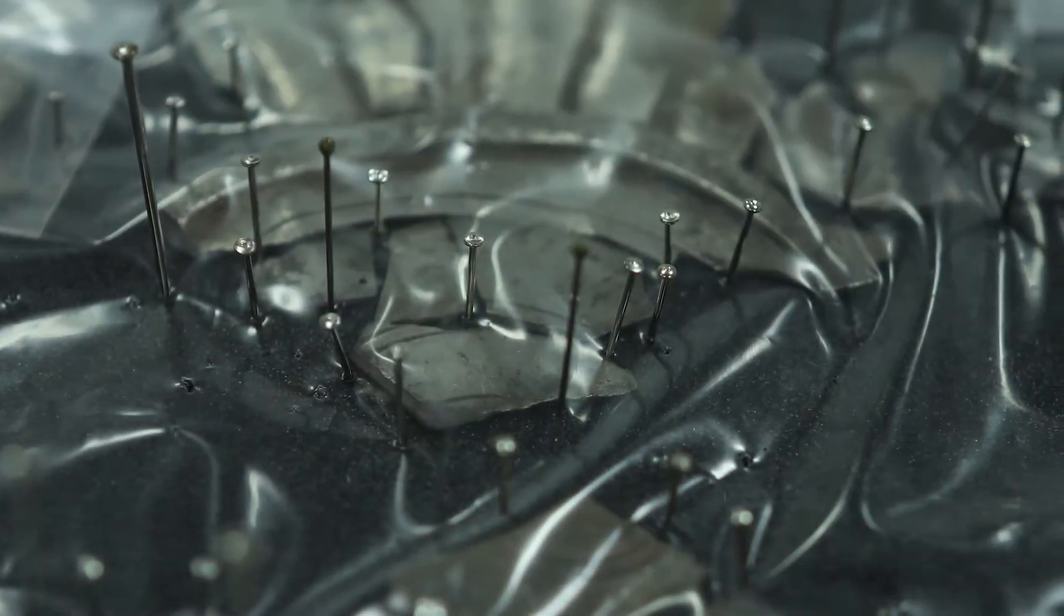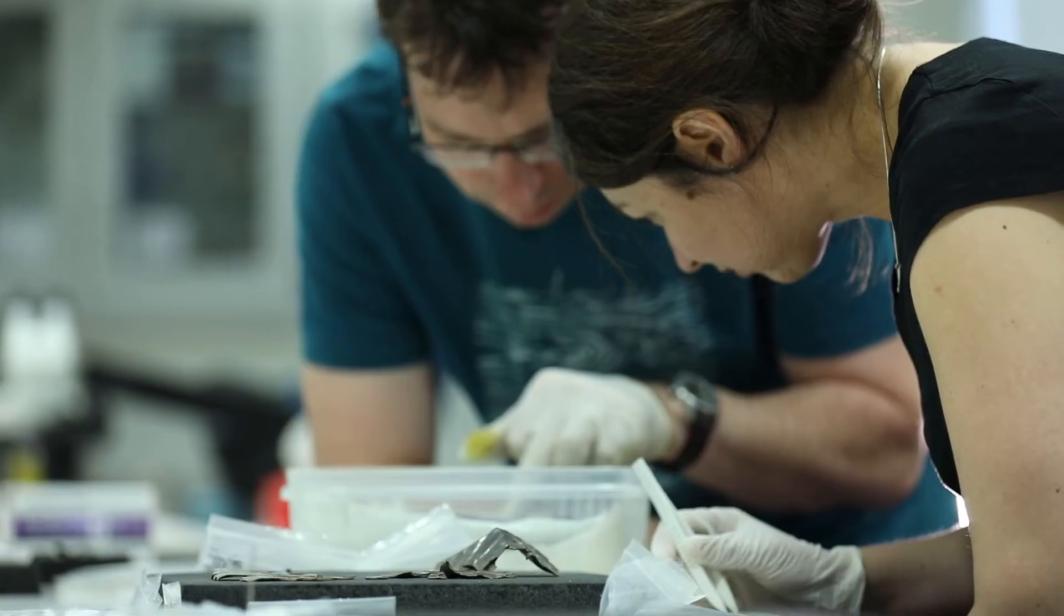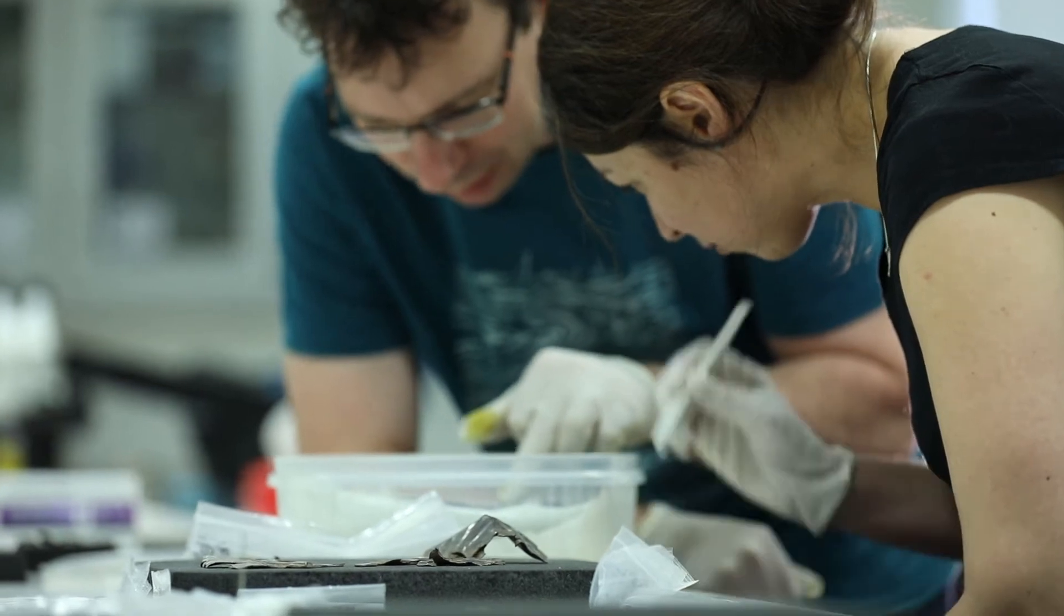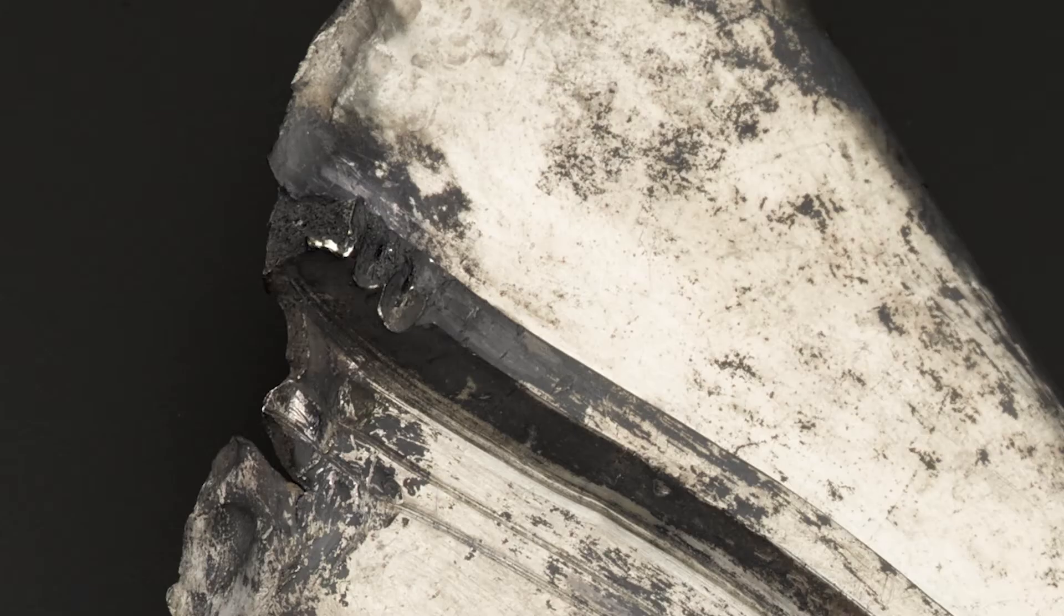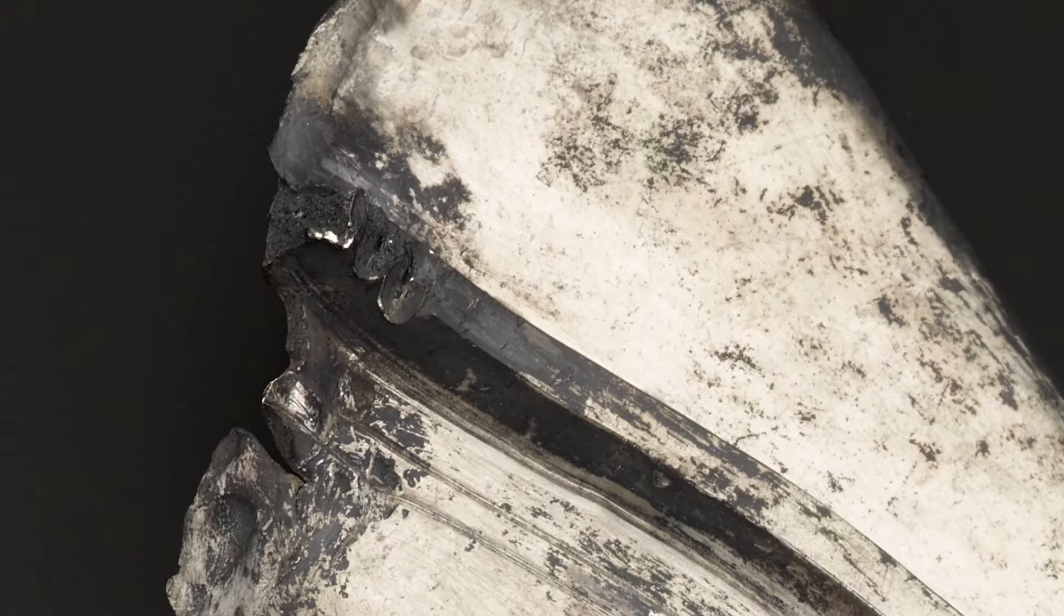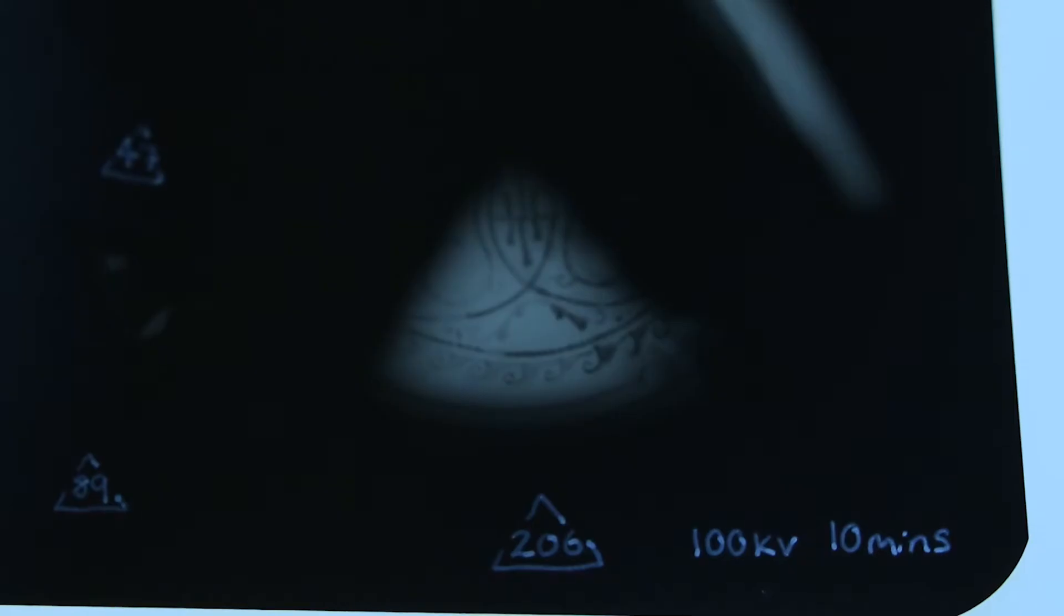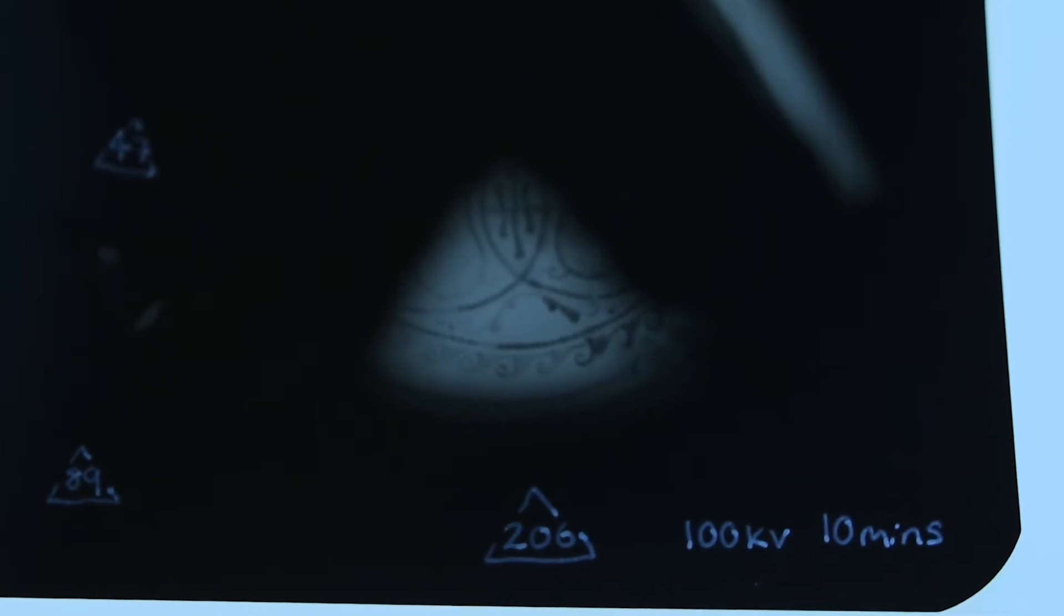When we started out, we had no idea how all these things would fit together or what they were intended to look like. But as you look at the objects and clean the surfaces, get the mud off, you start to pick up clues. You see bits of rim or tool marks, things that begin to match together. And working with the conservators, working with an illustrator, working with scientists and with archaeologists, you begin to get a picture of how these vessels would have looked.